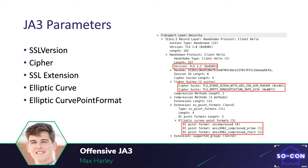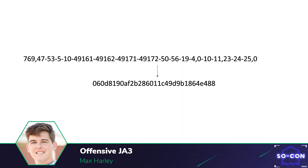When there are multiple values, a hyphen is put between them, and commas separate the fields. This is an example of a JA3 string. If you take the MD5 hash of that string, you get the JA3 signature.